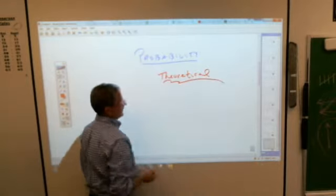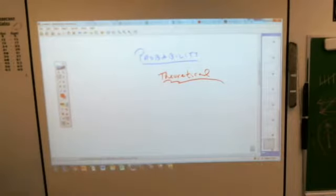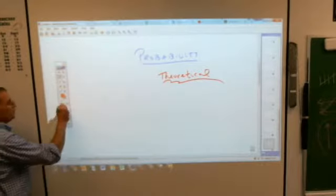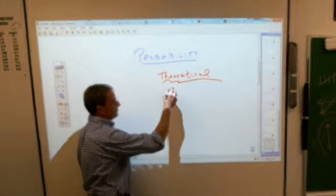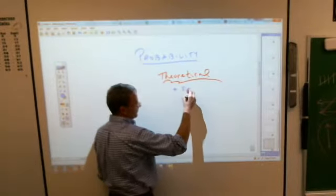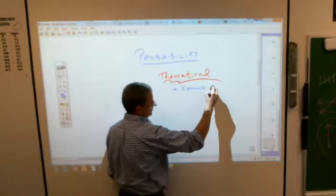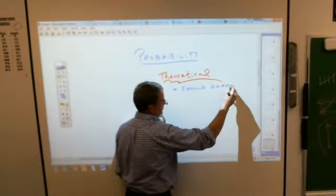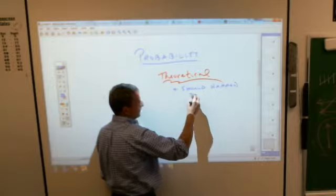Maybe we've heard the phrase theoretically speaking. And when we talk about theoretical, everybody know what that means? We say in theory, theoretical probability is what should happen mathematically. What should happen by way of math.